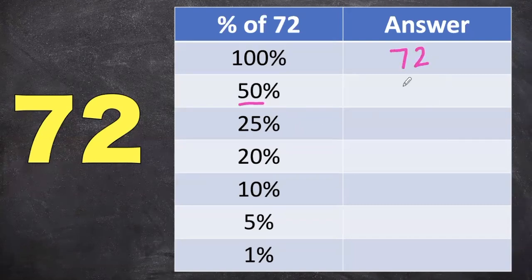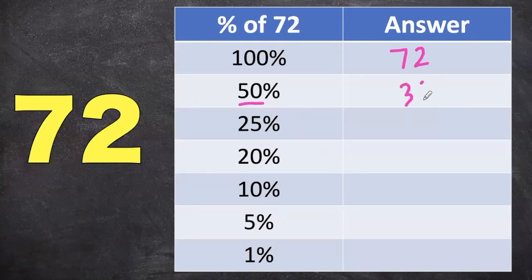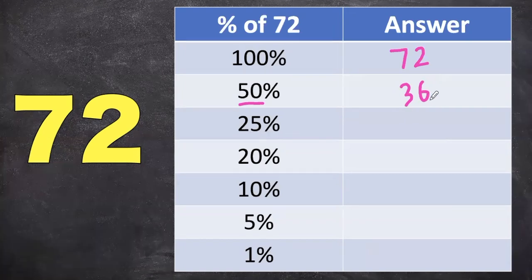And 50% is just half of that number. So half of 72 is going to be 36. And then 25% is half of 50, so that's going to be 18.